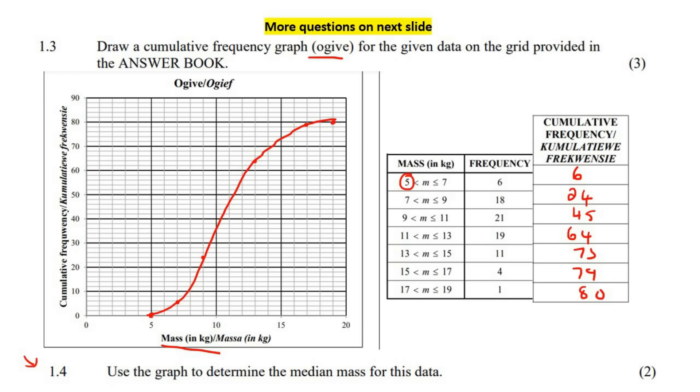Now we have another question down here at the bottom. It says, use the graph to determine the median mass for the data. You're not going to use this. You're going to use the graph to determine the median. Now how does median normally work? Well, if I gave you like a whole bunch of values like this, then the median is the number that is in the middle.